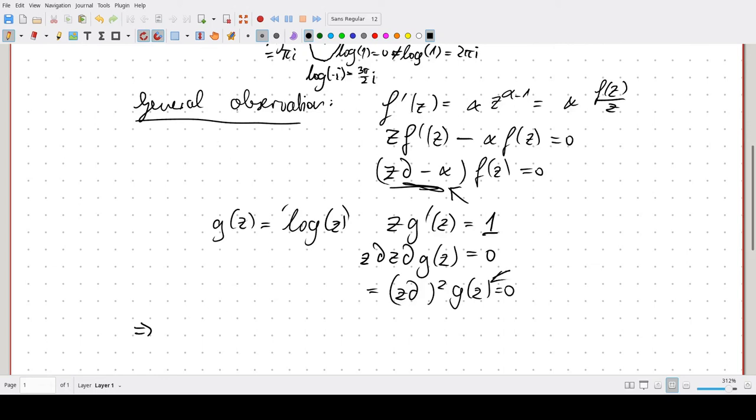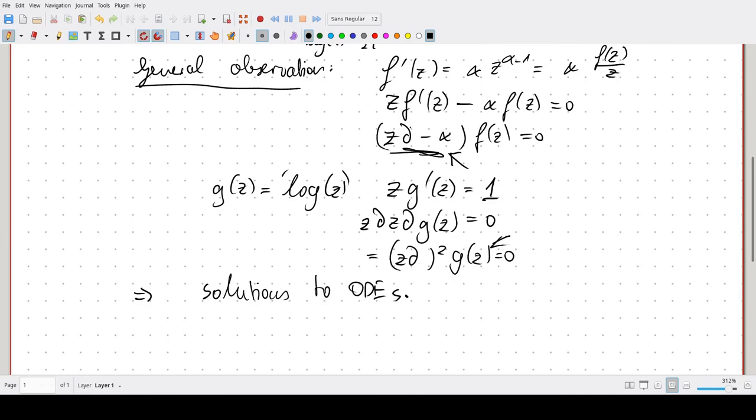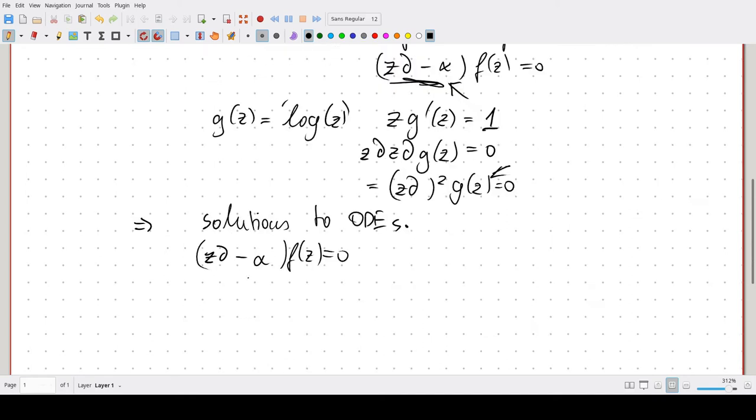So generally we get these as solutions to differential equations. I mean big deal, most analytic functions are in some way solutions to differential equations, but what kind of ODEs? So if we look at z derivative minus alpha f of z is zero, then we can divide through by the leading coefficient because in the end we want this to be explicit. Then we see that this is a linear differential equation. One of its coefficients actually has a singularity.